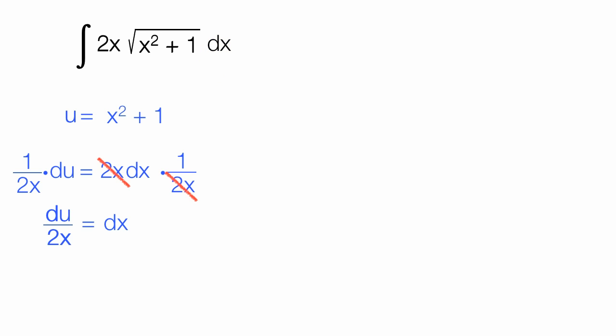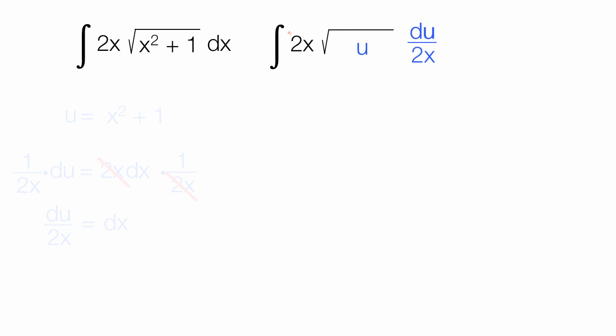Let me copy this over to the right. This x squared plus 1 is the same in both places, so I put u there. Where there's a dx, I'm going to put du divided by 2x. Notice these 2x's cancel out. Now, this is looking up. I have the integral of the square root of u du.